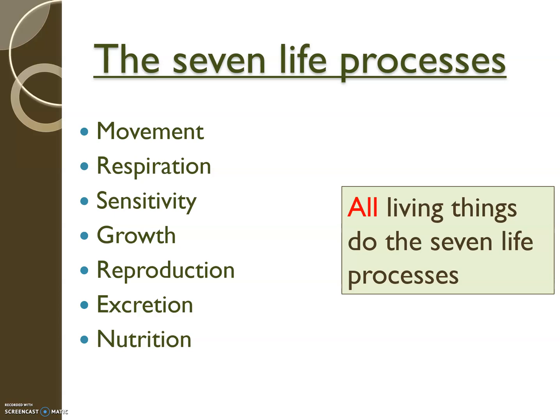Welcome back to Pure Science Education. Today we're looking at classification, which always comes up in Key Stage 3, normally in Year 8. In order to do classification, we can say living things can do seven processes, normally known as MRS GREN.